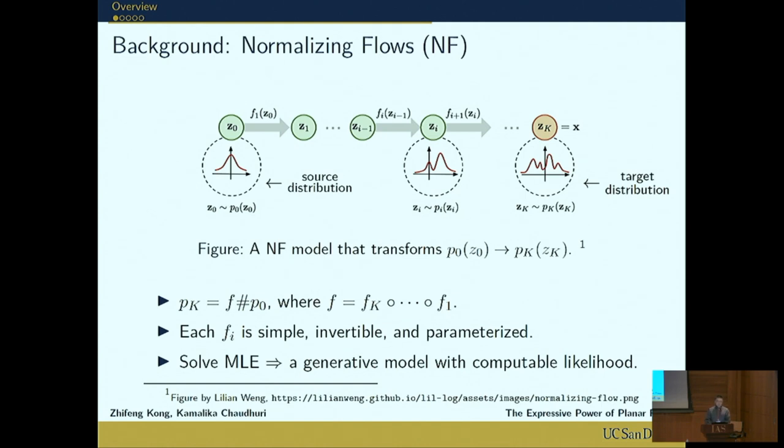pk is written as f#p0, which I will read as f over p0. It can be computed by the Jacobian of f, where f is composed of k simple, invertible, and parameterized transformations.